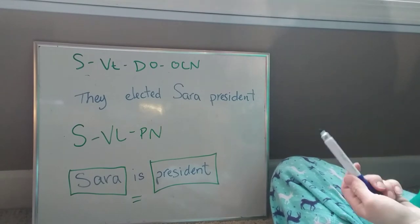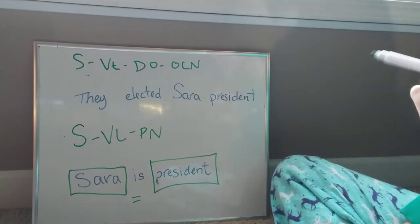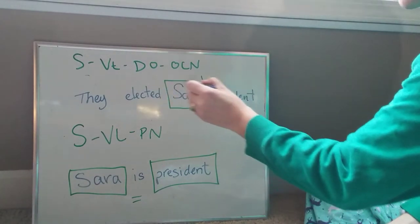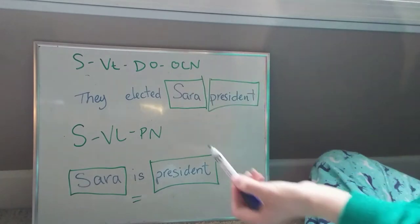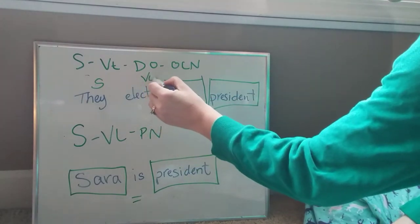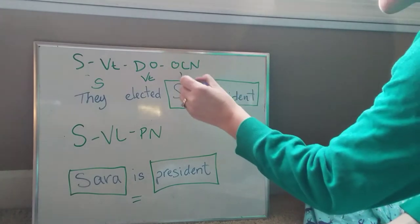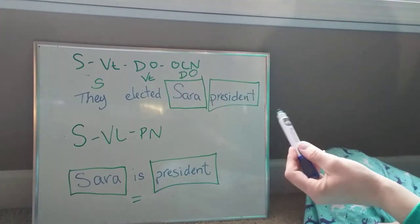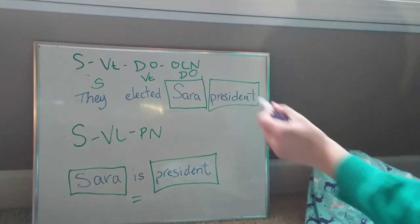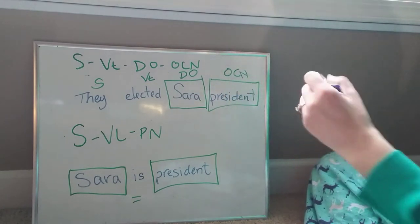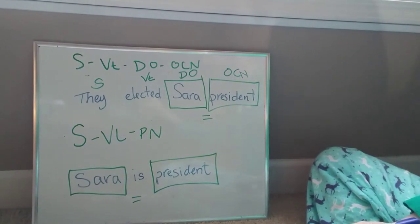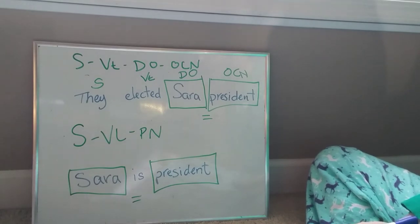In the SVT-DO-OCN sentence pattern, it's very similar in that it's also going to rename a word, but it's going to do it with the direct object instead of the subject. So the subject in the sentence is 'they.' They elected — so this is a verb transitive — they elected who or what? Sarah. They elected Sarah to what? They elected her what? They elected her president. So that's the O-C-N. And we can follow all of that with our question confirmation chart, so Sarah equals president in this case. The OCN will always be a noun.